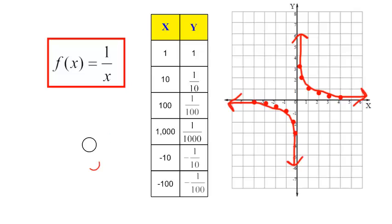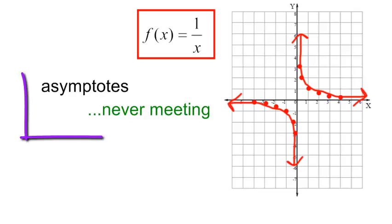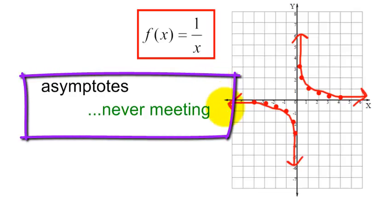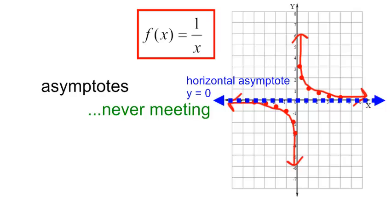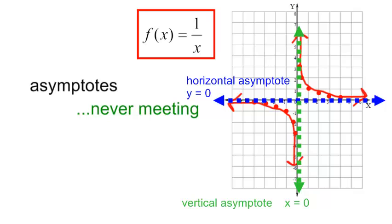f of x is equal to 1 over x. I also want to talk about asymptotes. Asymptotes means never meeting, never quite getting there. This graph curls around a horizontal line at y is equal to 0 — that is a horizontal asymptote, y equals 0. My graph never touches that horizontal asymptote. I also have a vertical asymptote where my graph curls up and never touches x equals 0. In this graph we have a horizontal asymptote y equals 0 and a vertical asymptote x equals 0.